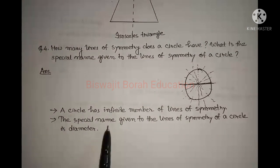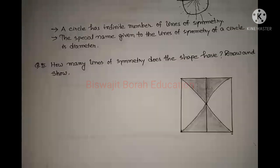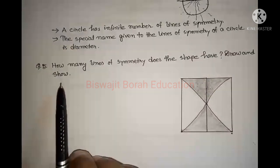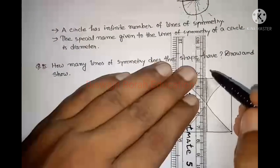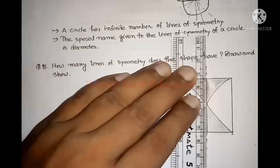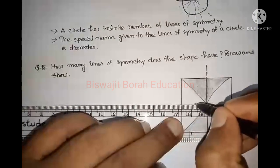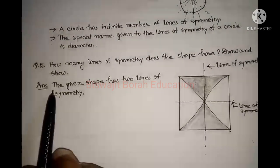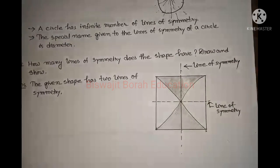Question number five: how many lines of symmetry does the given shape have? Draw the lines of symmetry. The given shape has two lines of symmetry. You need to draw and label the lines of symmetry on the shape.